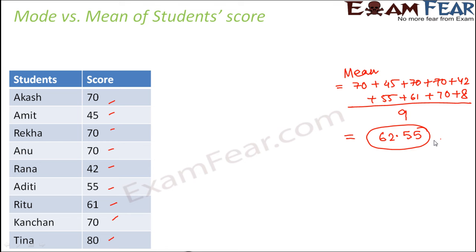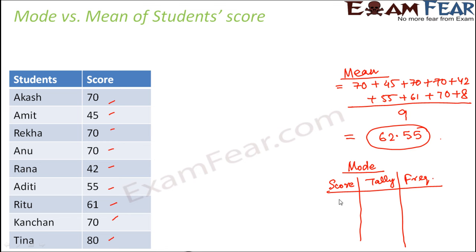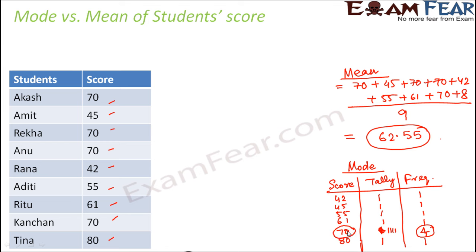Now let us calculate mode. We prepare a frequency distribution table with columns for score, tally, and frequency. The different scores, arranged in order, are: 42, 45, 55, 61, 70, and 80. Students who scored 42, 45, 55, 61, and 80 each did so once, while 70 was scored by four students. The maximum frequency is 4, corresponding to score 70, so the mode is 70.